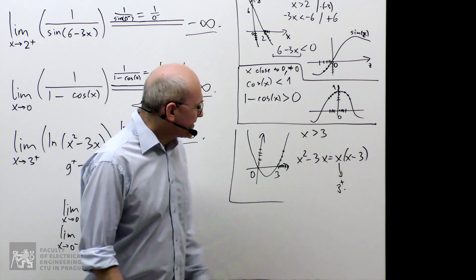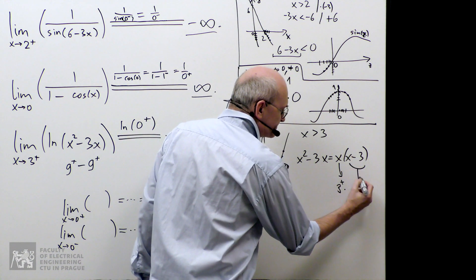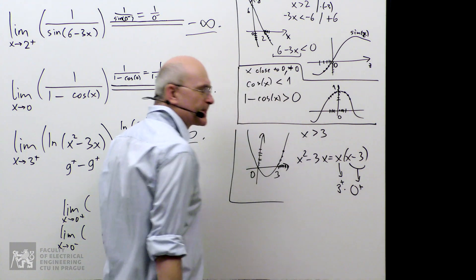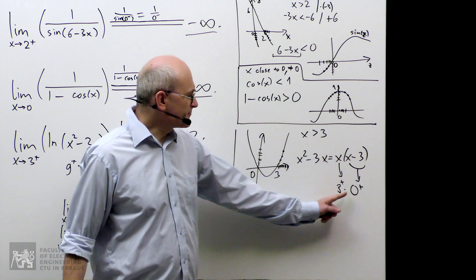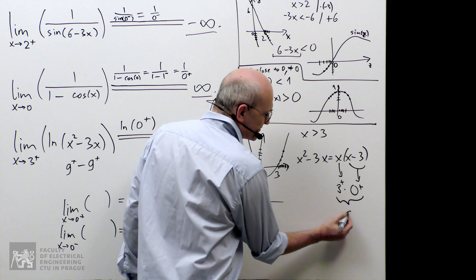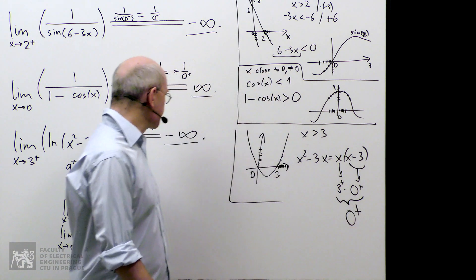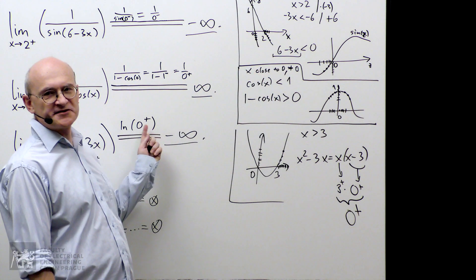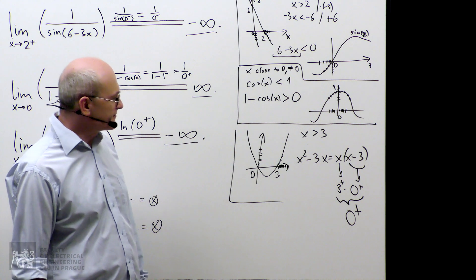And x minus 3 actually tends to a positive 0. A positive 0 multiplied by a positive number yields a positive 0. So, that's justification or confirmation that this positive 0 is really right.